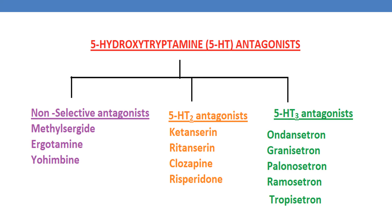Let us discuss some of the non-selective antagonists, 5-HT2 antagonists, and 5-HT3 antagonists. Examples of non-selective antagonists of 5-HT are methylsergide, ergotamine, and cyproheptadine. This class also has alpha-blocking activity. Coming to 5-HT2 antagonists, examples of drugs are ketanserine, ritanserine, clozapine, and risperidone.